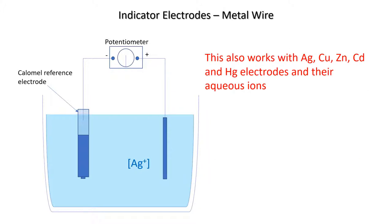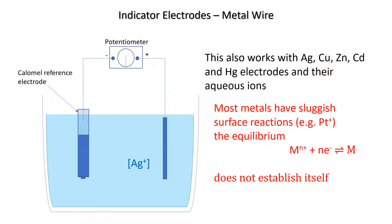It's also possible to use other metals as indicator electrodes for their own ions. This works with gold, copper, zinc, cadmium, and mercury electrodes. However, most metals, due to sluggish surface kinetics, don't readily establish an equilibrium and such electrodes are not useful. So for most species, a different type of electrode is required.